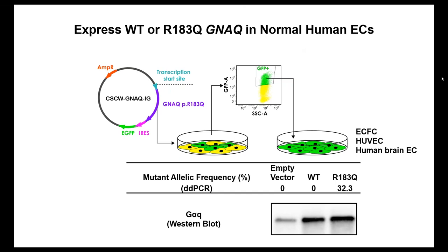We use a lentiviral vector inserting either wild-type or mutant GNAQ with GFP, cells are transduced and sorted for GFP-positive cells. Since normal endothelial cells have two normal GNAQ alleles and we're adding a third by lentivirus, the expected mutant allelic frequency is 33% — and she's getting 32%, which is very close. Western blot for G-alpha-Q confirms overexpression in both wild-type and R183Q mutant cells compared to empty vector. This overexpression is something to keep in mind for interpreting the experiments.